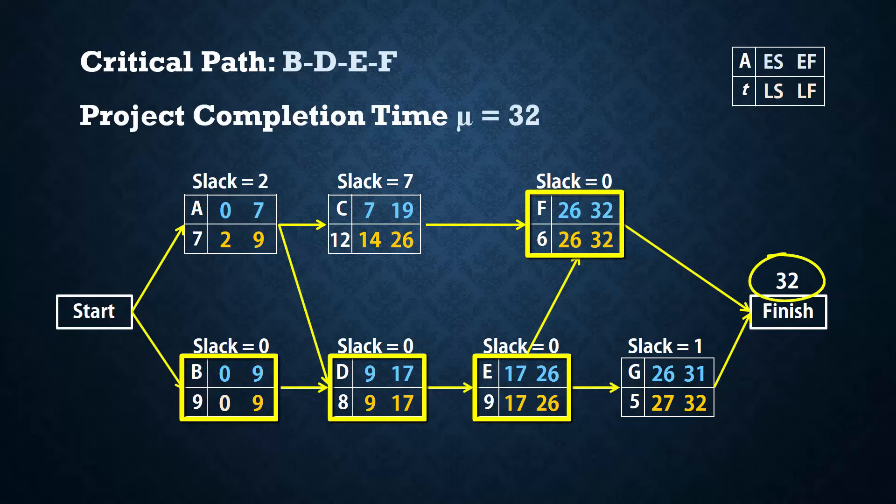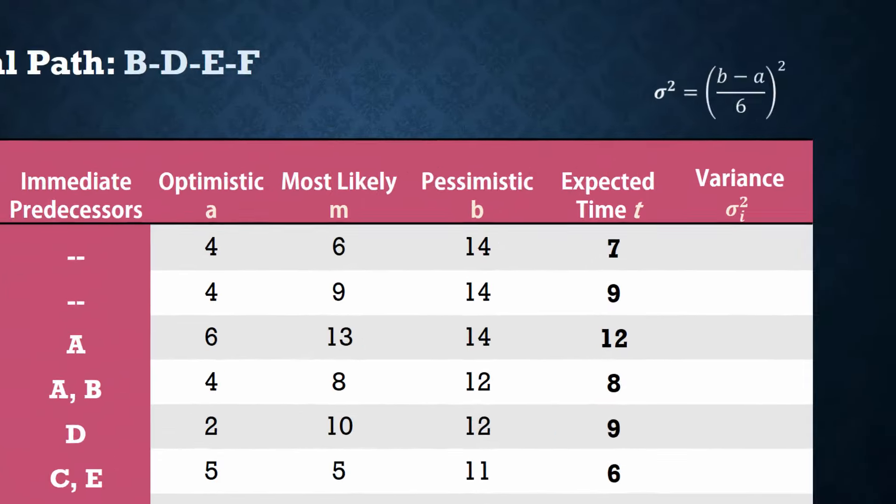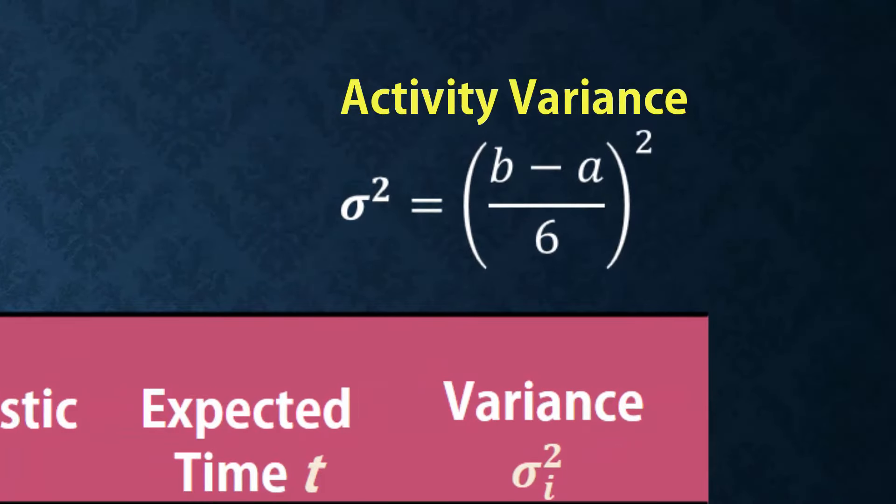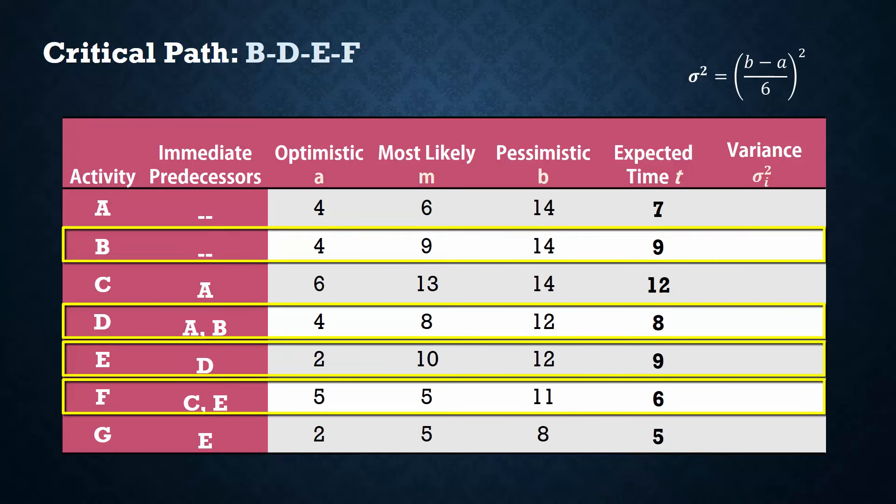Note that the project completion time can also be found by adding up the activity times for critical activities. Now, the formula for calculating the variance for each activity is b minus a divided by 6 squared. Just like the project completion time can be found by adding up the expected activity times for critical activities, the project variance is also found by adding up variances for critical activities. So we only need to calculate the variances for critical activities.